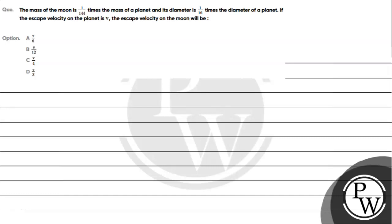Hello, let's read the given question. The question says the mass of the moon is 1 upon 144 times the mass of a planet, and its diameter is 1 by 16 times the diameter of a planet. If the escape velocity of the planet is v, the escape velocity on the moon will be: